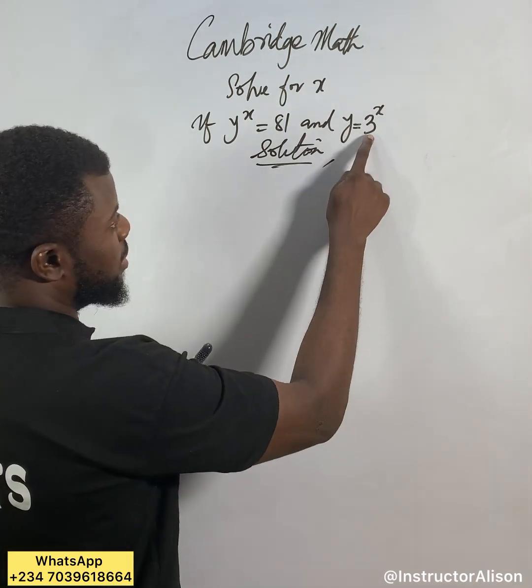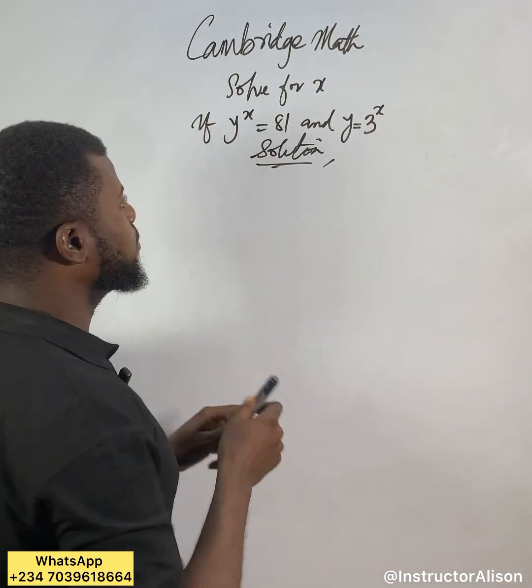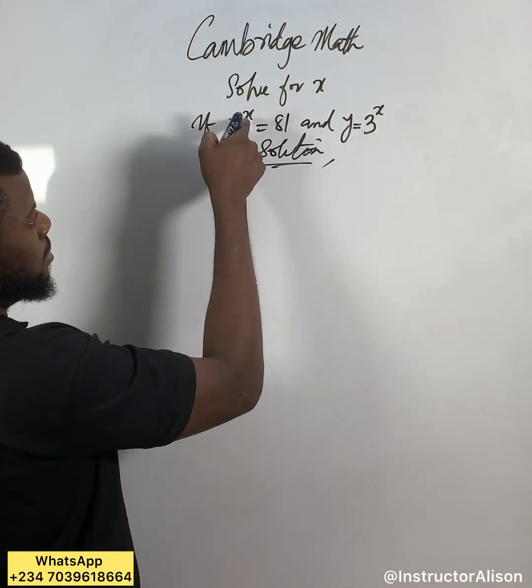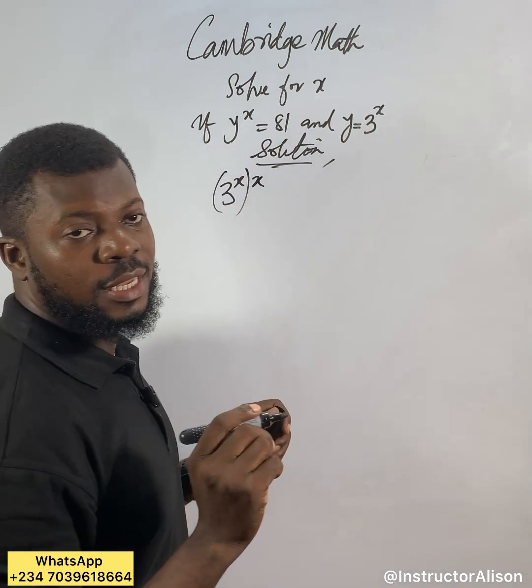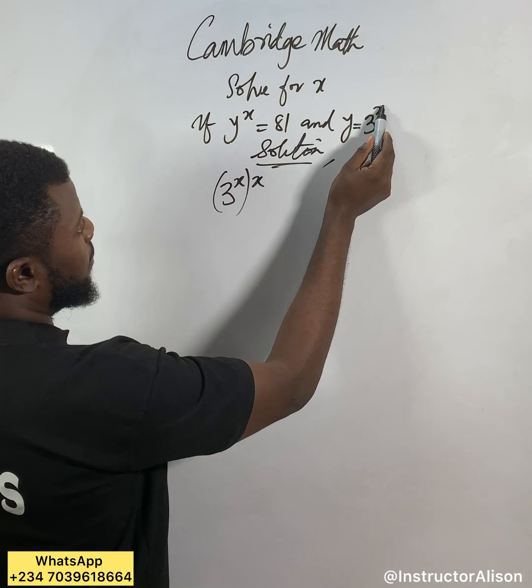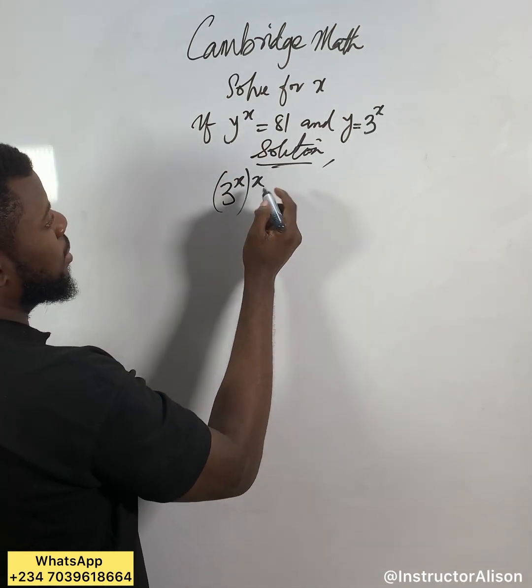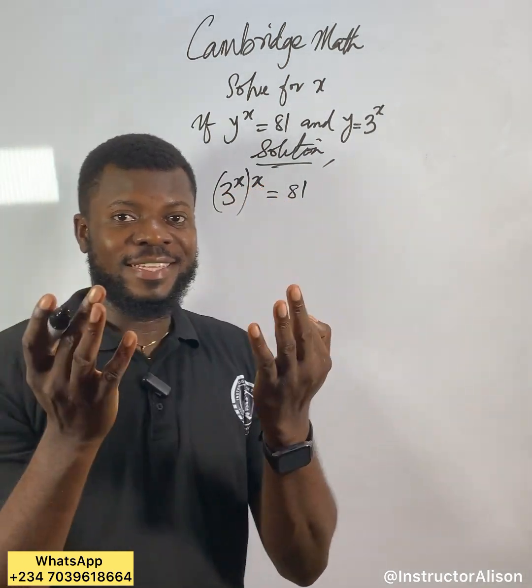If y equals 3 to the power of x, it means anywhere I see y I will put this 3 to the power of x. Watch, I can say in place of y I will put (3^x) raised to the power of x. So in place of y, I put 3^x, then we have (3^x)^x equal to 81.